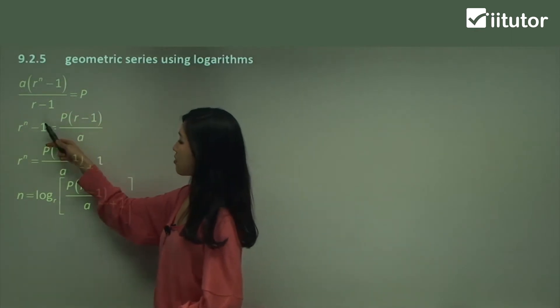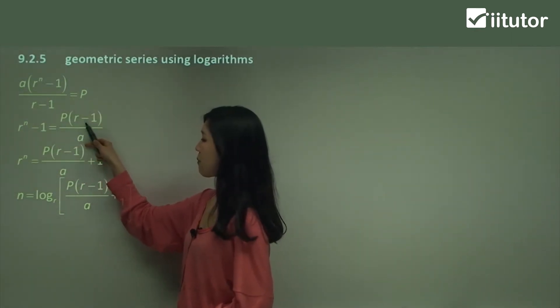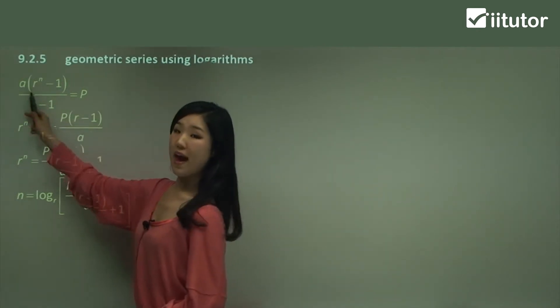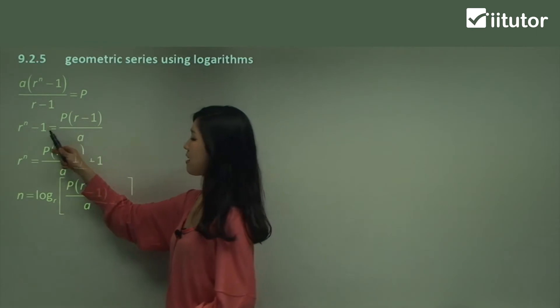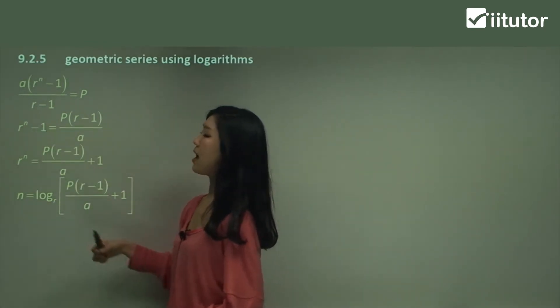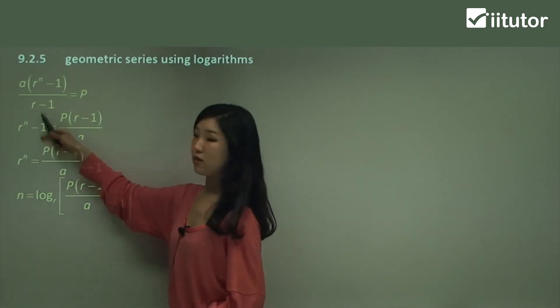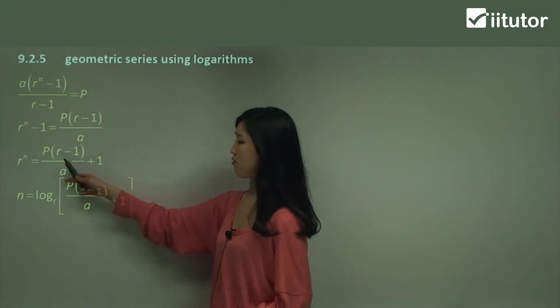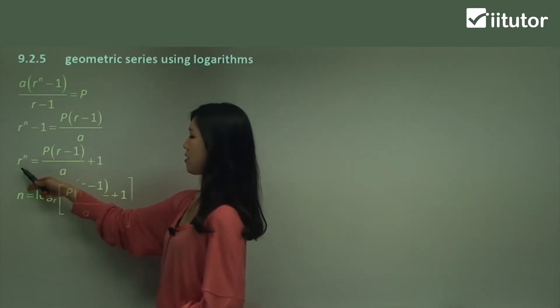So I have p times r minus 1 over a, and then this side we're just left with r to the power of n minus 1. Now simply I'm just going to move negative 1 over to the other side. So I have p times r minus 1 over a plus 1, and this side I'm just left with r to the power of n.